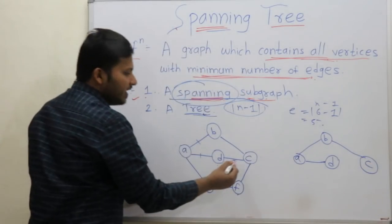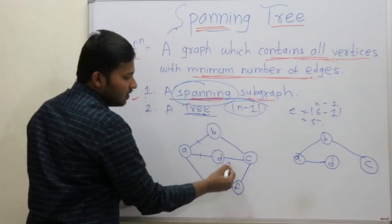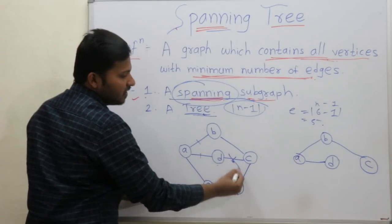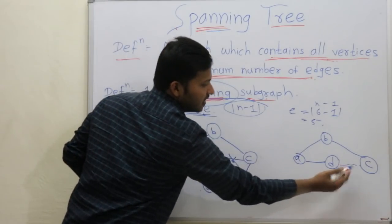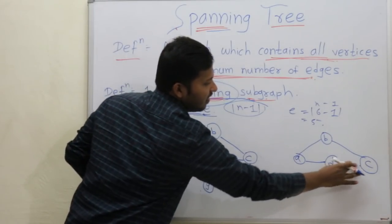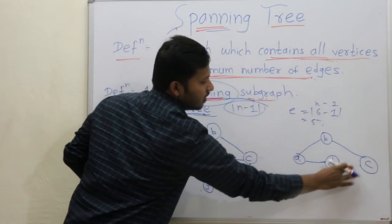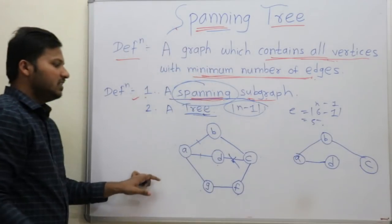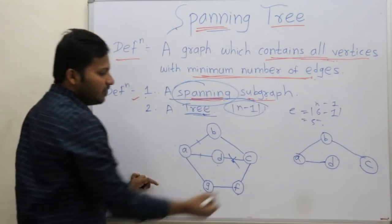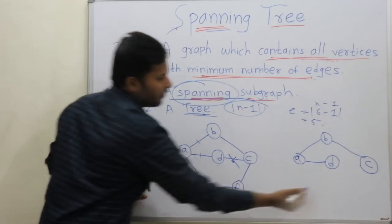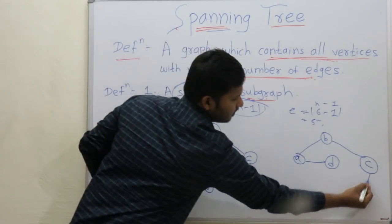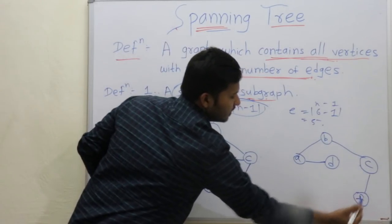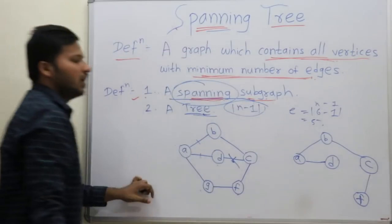Can we take C, D? No, we cannot — because it forms a cycle. So I will take C, F instead.